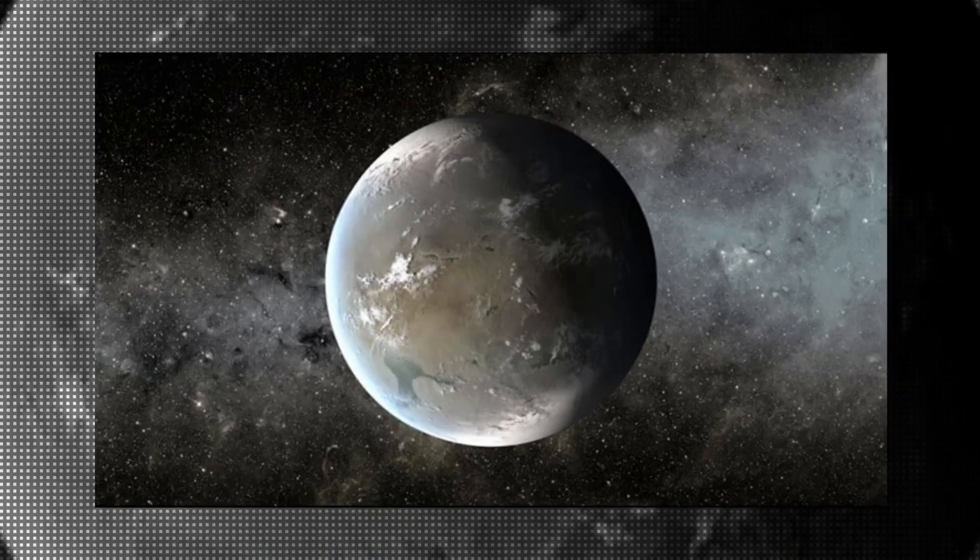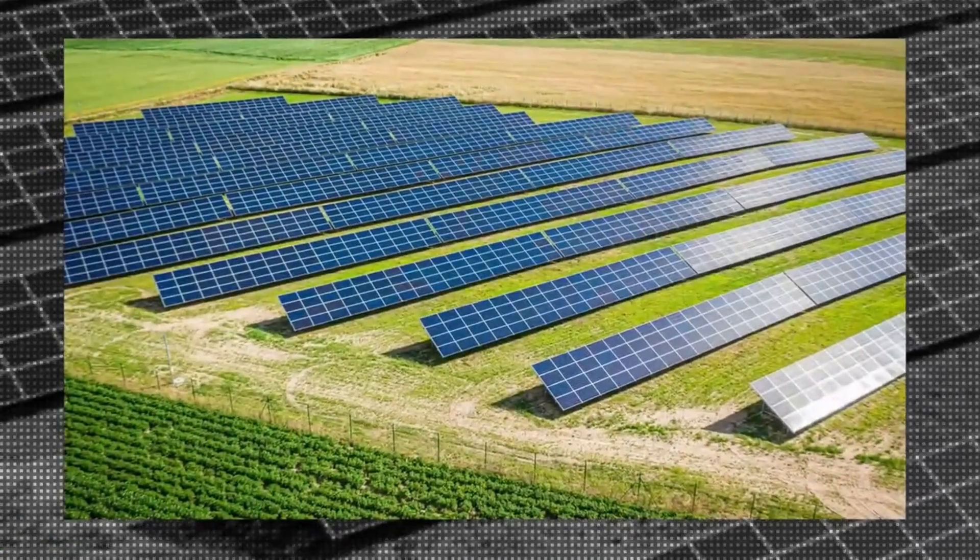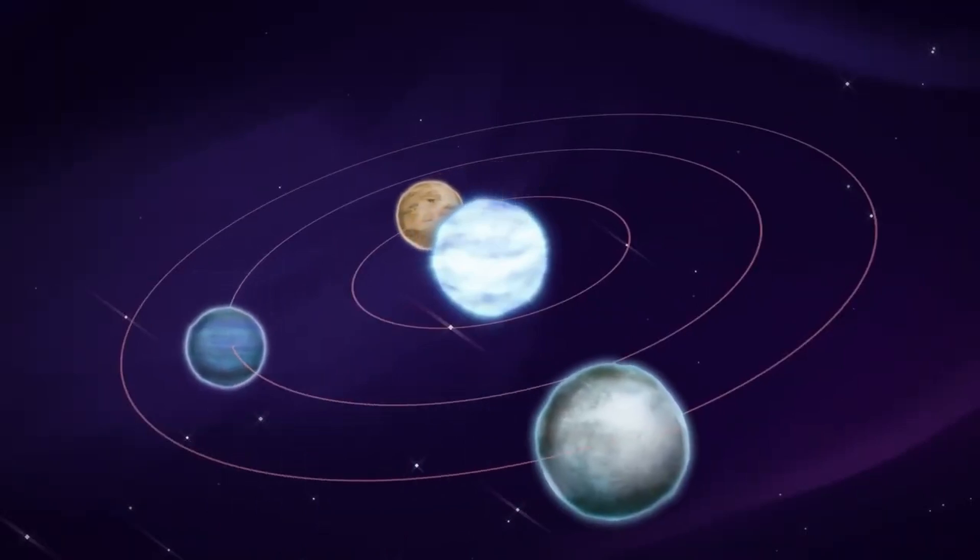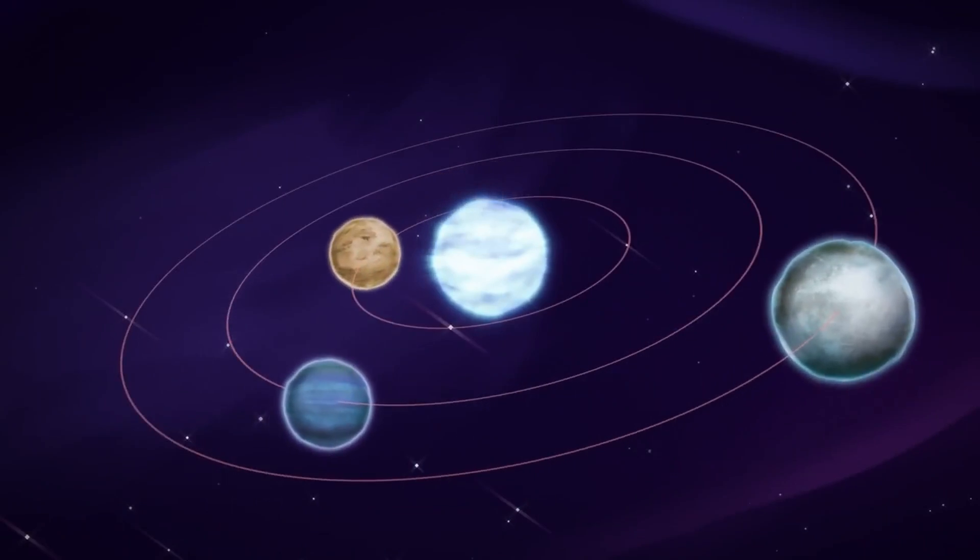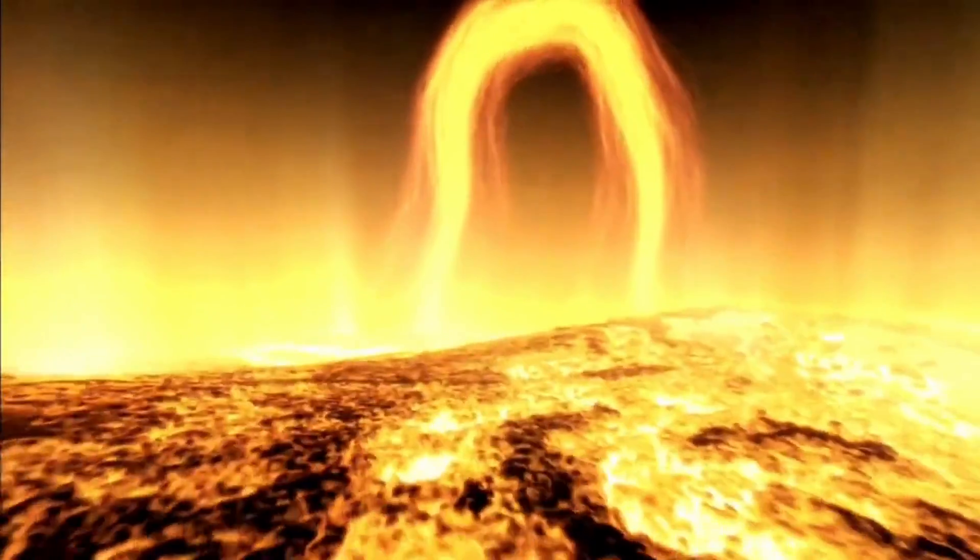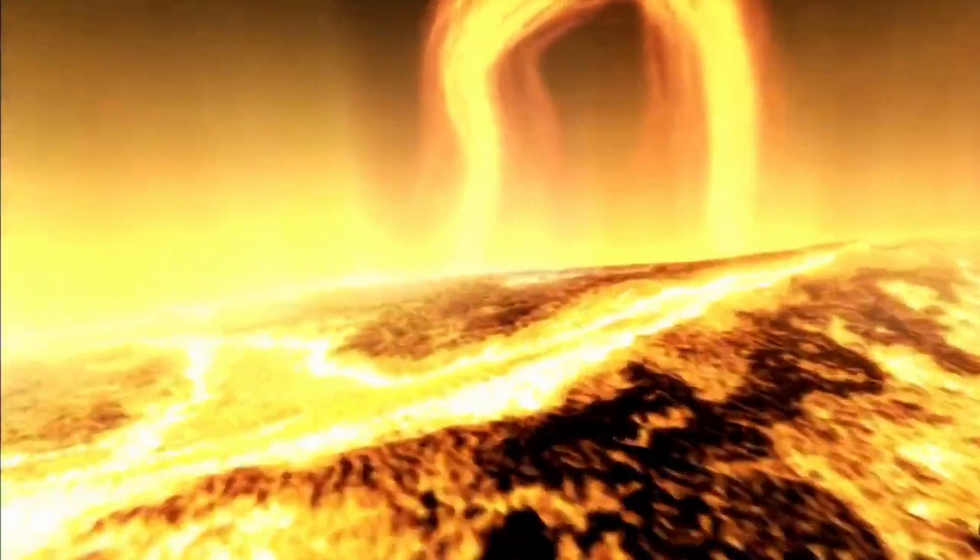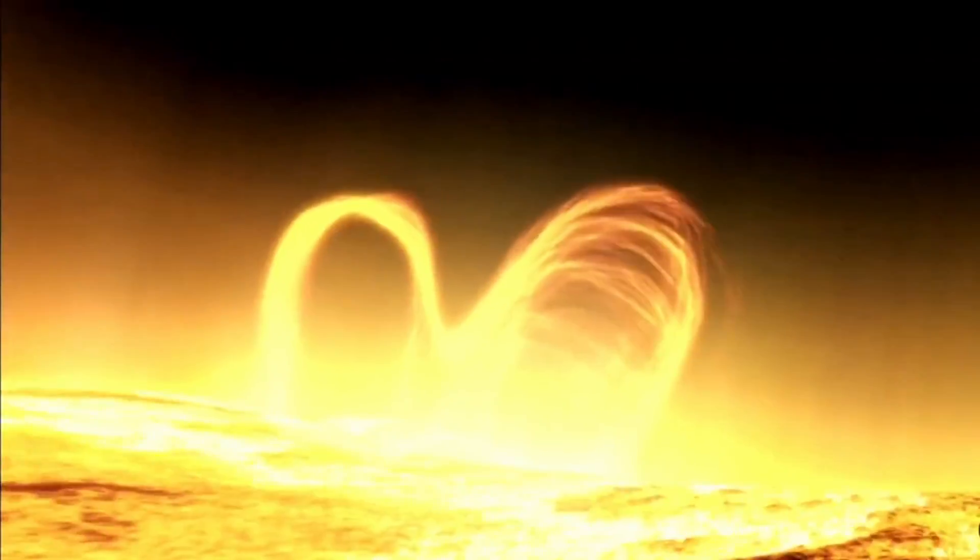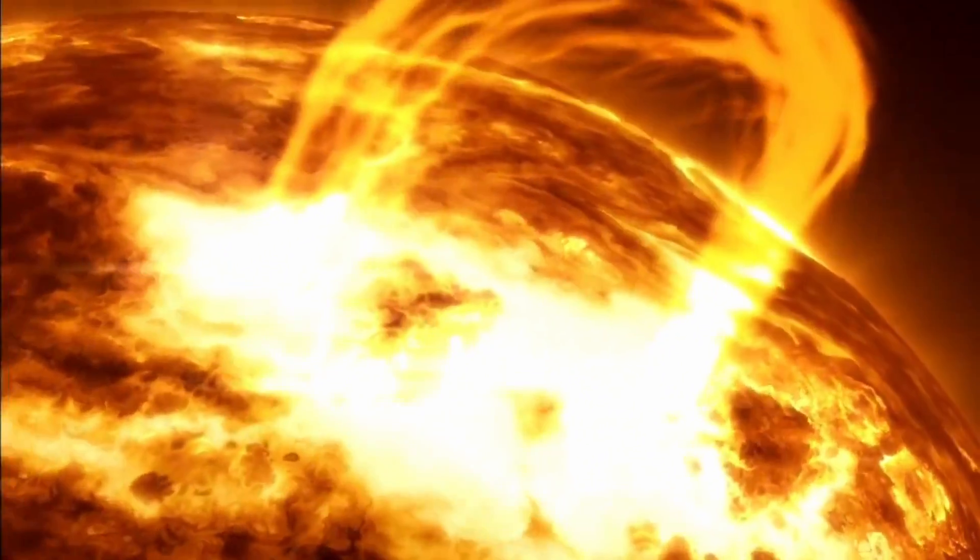A tidally locked planet has advantages because solar energy farms would always produce electricity. The energy could then be distributed to other parts of the exoplanet that require it. Colonists could choose any average temperature they wanted and hide from solar flares by keeping dangerous Proxima Centauri just over the horizon and out of harm's way.